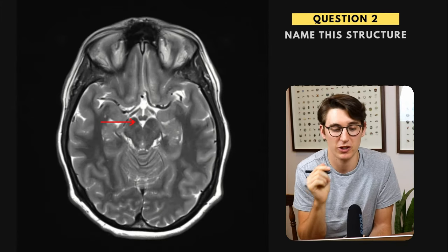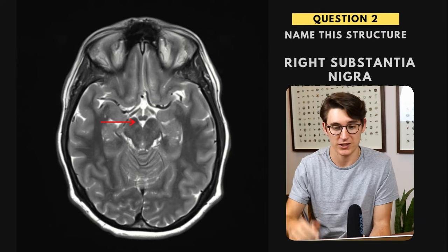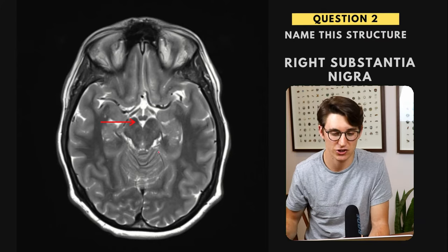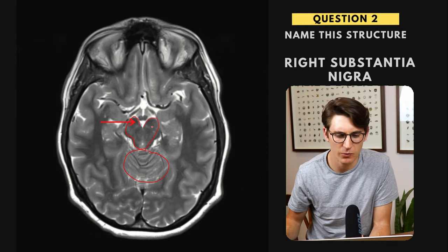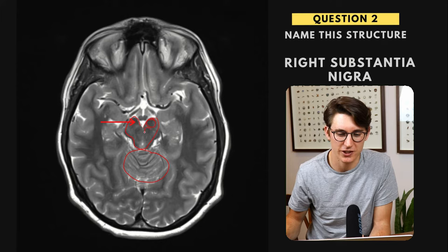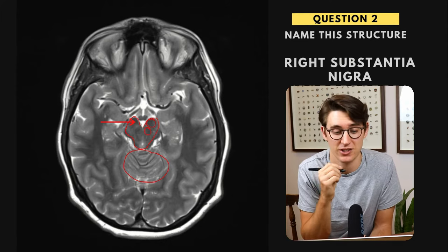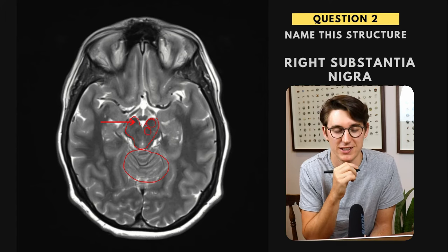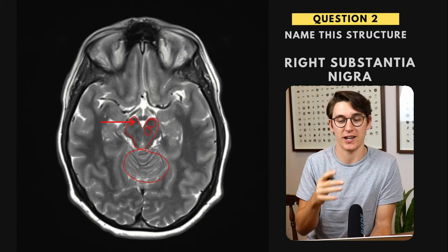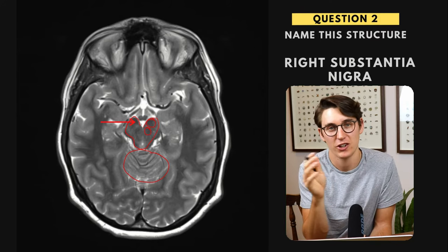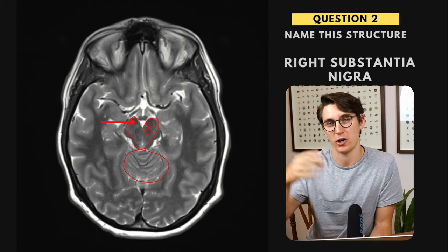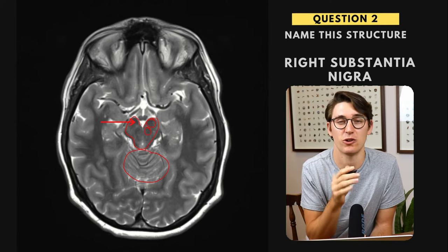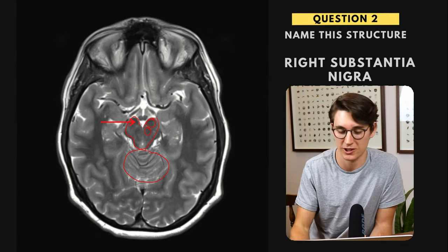Question two, we're asked to label this structure. This is the right substantia nigra. We can see that we are cutting just the top level of our cerebellum here, and this is the classic shape of the midbrain, so we know we're sitting at the level of the midbrain. There are two dark structures — one anterior and one posterior. The anterior structure is the substantia nigra. Posterior to that is our red nucleus. The substantia nigra on radiological pictures looks like one body, but histologically and functionally it's split into the pars compacta and the pars reticularis, which is involved with Parkinson's disease.